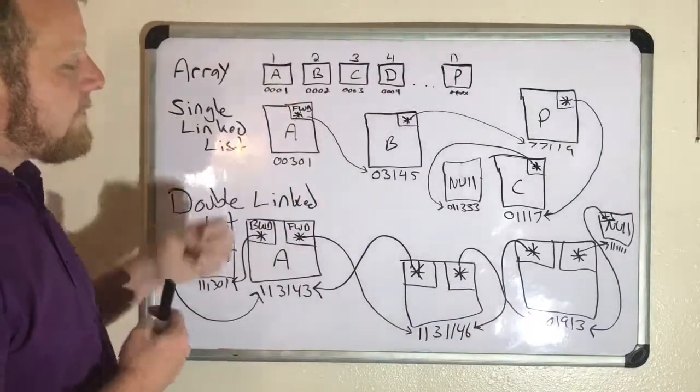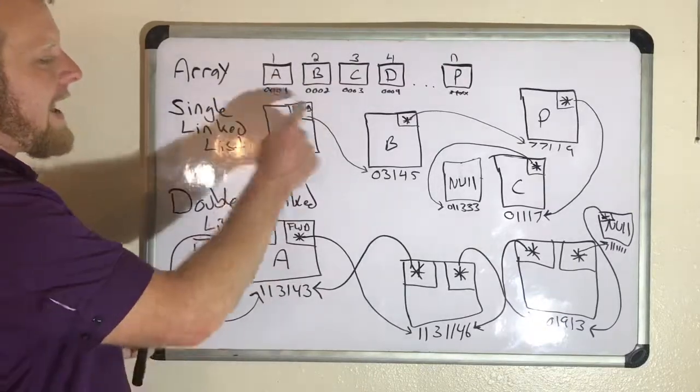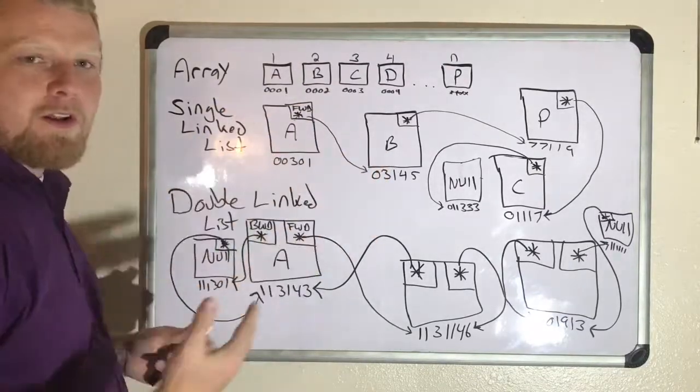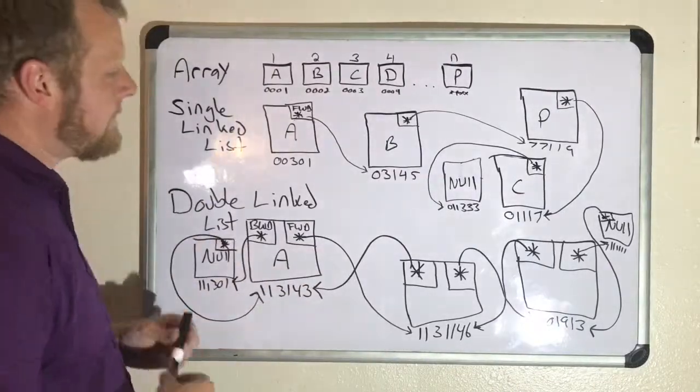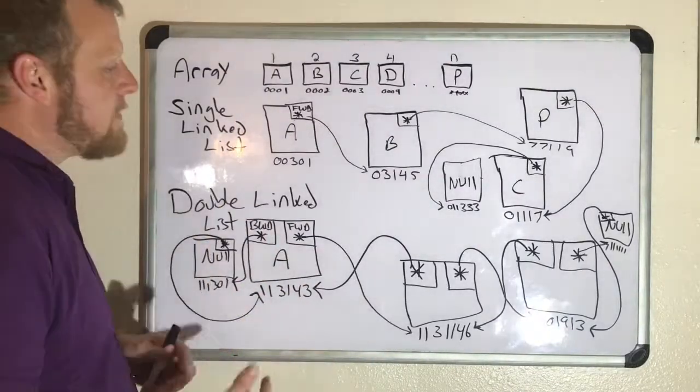So within A, you've got to store more information. You have to store the address of B, so you know where to go to next. You know how to traverse or iterate the list. Those are key terms that you might want to get familiar with.